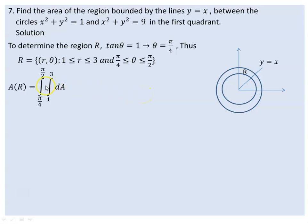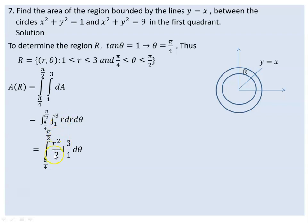The area of the region is the double integral of 1·dA, which is just dA. The integral of r dr gives r²/2. Evaluating from r=1 to r=3 gives 9/2 minus 1/2; that is 8/2, which equals 4.